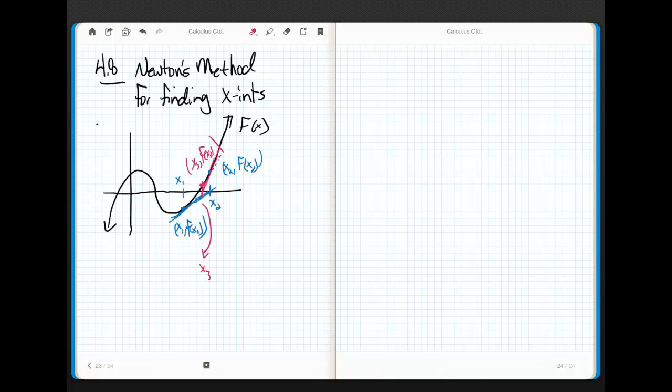And then, when I take the tangent line at that point, ooh, green. That's definitely not hard to miss. What's happening? What is happening to these values of x? They're getting closer and closer and closer to that x-intercept right there, which is what we wanted to find.